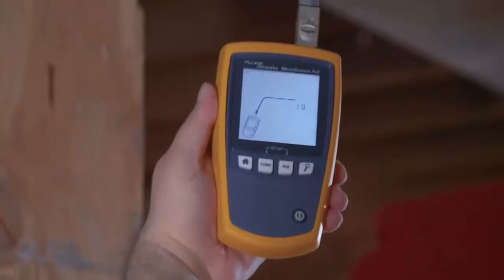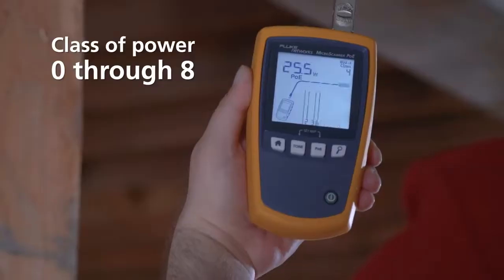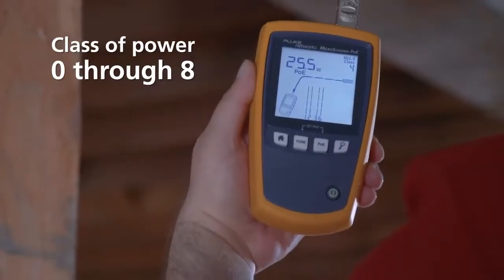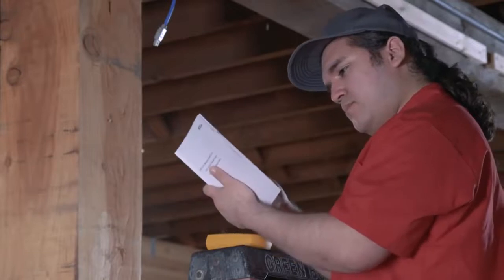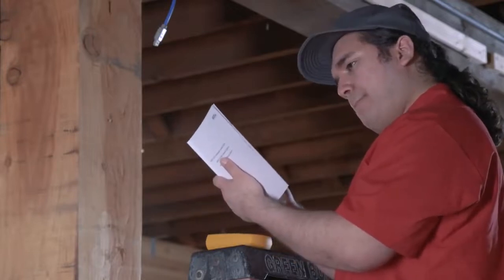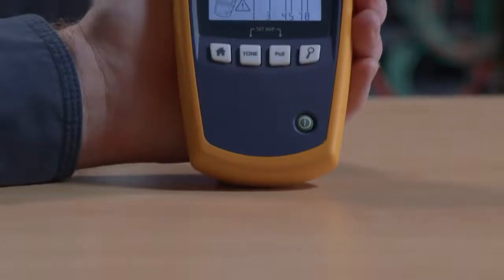Just plug it in and you'll see the class of power, 0 through 8, as advertised by the switch. If it's greater than or equal to the power required by the device, you'll know it'll power the device. It's also got a complete cable tester that will show you the location of common faults and a built-in tone generator for tracing wires.